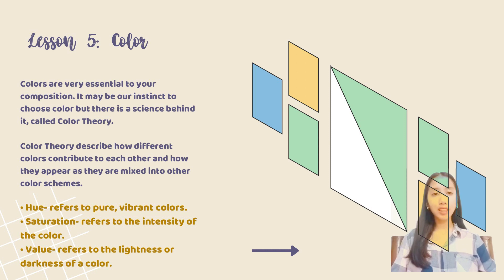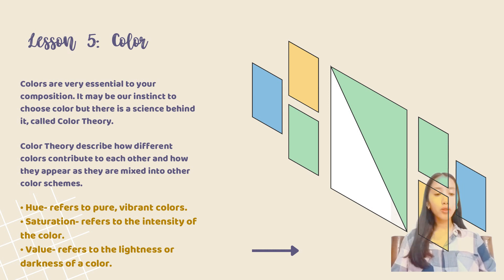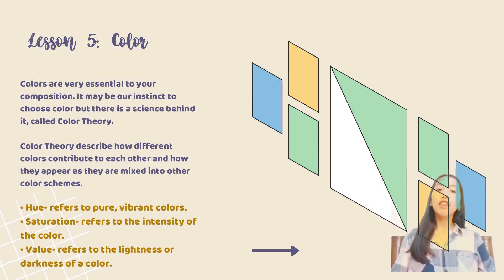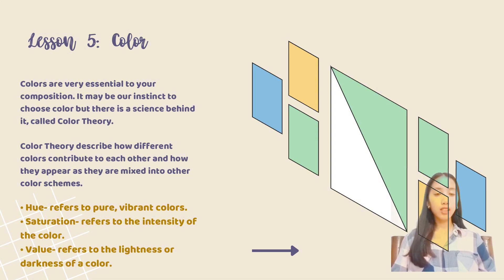Imaging and Design for Social Impact, Lesson 5: Color. Colors are very essential to your composition — one may use a combination of one or more colors. It may be our instinct to choose colors, but there is a science behind it called Color Theory. Color Theory describes how different colors relate to each other and how they appear when mixed into other color schemes. Key terminologies: Hue refers to a pure, vibrant color; Saturation refers to the intensity of the color; Value refers to the lightness or darkness of a color.